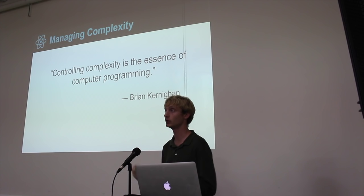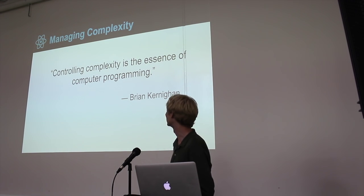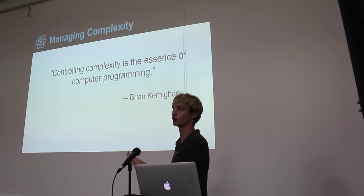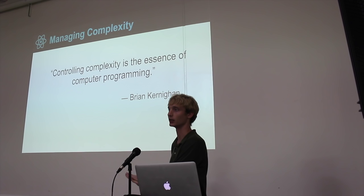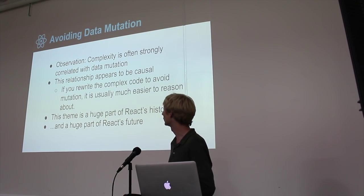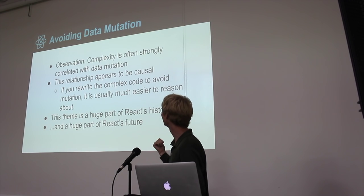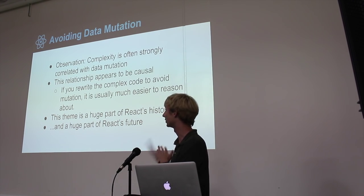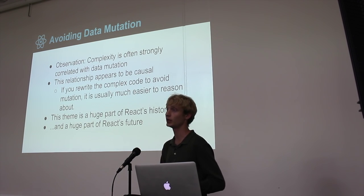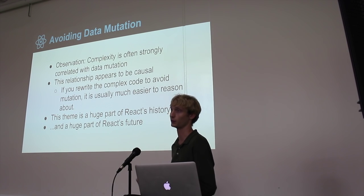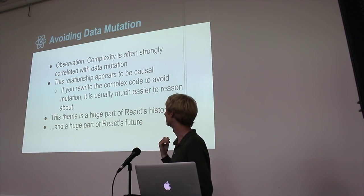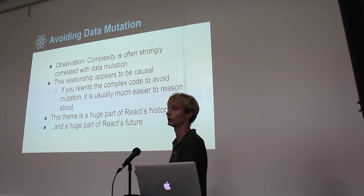Why do we do this? The key is controlling complexity. Brian Crann said that controlling complexity is the essence of computer programming, and that's what we're trying to do here. The virtual DOM that powers React and the reason it's fast is an implementation detail — it's not the reason React is cool. It just allows React to be this bridge in an efficient way. One observation is that complexity is oftentimes strongly correlated with data mutation, and this relationship does appear to be causal — when we're mutating data, it is very difficult to understand that code.